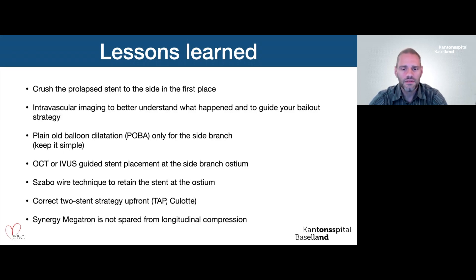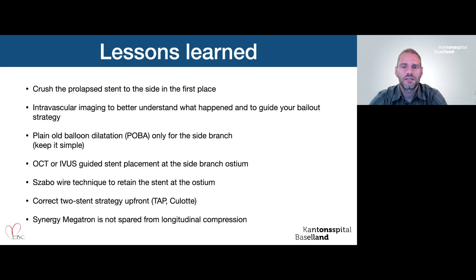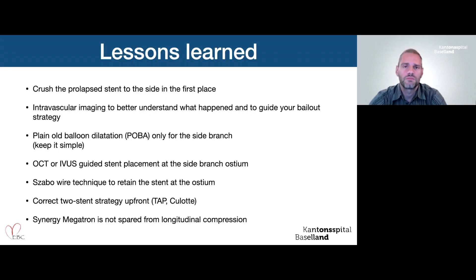In this case I had a dissection with flow-limiting result, so I had to bail out with a stent. Next time I would use OCT or IVUS to guide stent placement at the side branch ostium upfront. You can also use the SABO technique to retain the stent at the ostium, or do a correct two-stent strategy upfront with TAP or CULOTTE, which ultimately saves time. Last but not least, the Synergy Megatron is not spared from longitudinal compression — with bulky equipment like guide extension catheters, you can still deform the stent. Thank you very much for your attention.